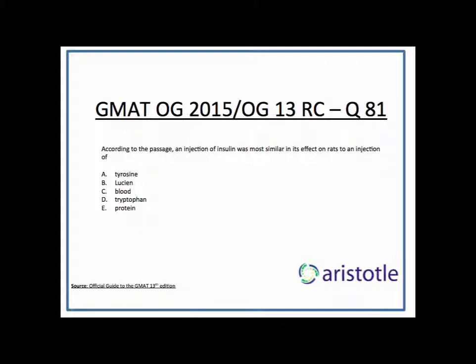Looking at the options — tyrosine, leucine, and protein — those three can be eliminated because those three actually cut down the release of tryptophan and serotonin.